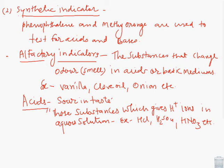The next is olfactory indicators. In our body, the receptors for smell are called olfactory. So olfactory indicators are substances that change their odor, means smell, in acids or basic medium. They are olfactory indicators like vanilla, clove oil, onion. These change smell in acid or base.